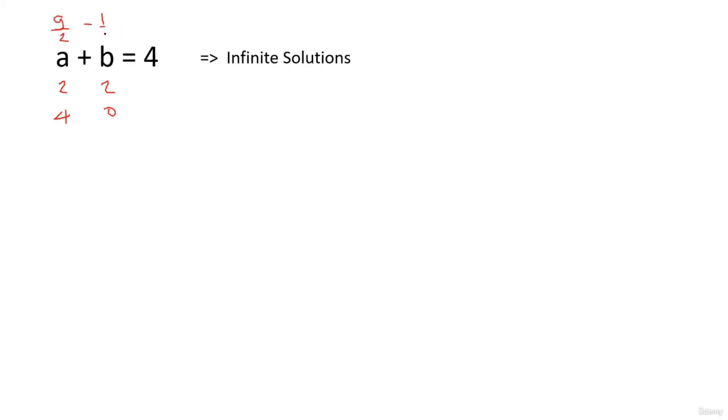You can take b as minus half, you can take a as let's say 8, you can take b as minus 4. So we have infinite possible solutions depending upon the type of values you take for a and b, right?